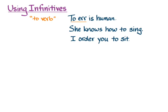In to err is human, what we have is a verbal idea acting as the subject of the sentence, so it's doing its verbal noun function. In she knows how to sing, the infinitive is completing some of the idea about what she knows. In I order you to sit, the infinitive completes the meaning of the command of I order. This is the one that we're going to use first in Greek and in Hanson and Quinn, where the infinitive completes the meaning of some other verbs.